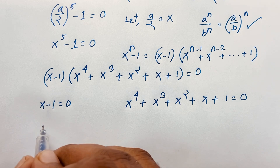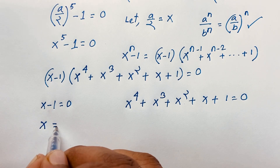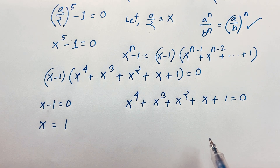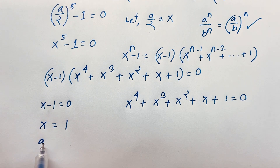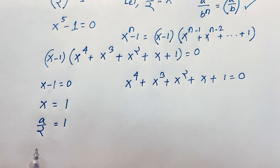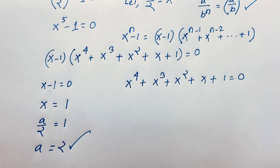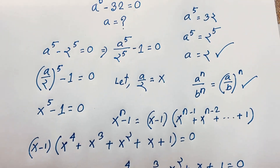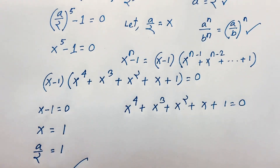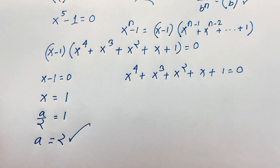From the first case, x minus 1 equals 0, so x equals 1. Recalling that x equals a over 2, we get a over 2 equals 1, and multiplying both sides by 2, we find a equals 2. This confirms our real solution.